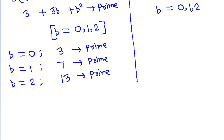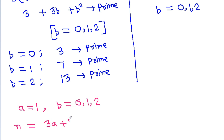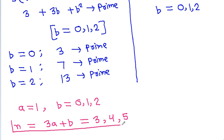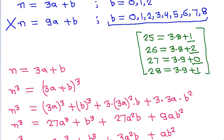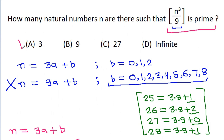So we get a equals 1 and b equal to 0, 1, 2. Since n equals 3a plus b, the values are: 3 plus 0 equals 3, 3 plus 1 equals 4, and 3 plus 2 equals 5. We get 3 values of n, so option A is correct.